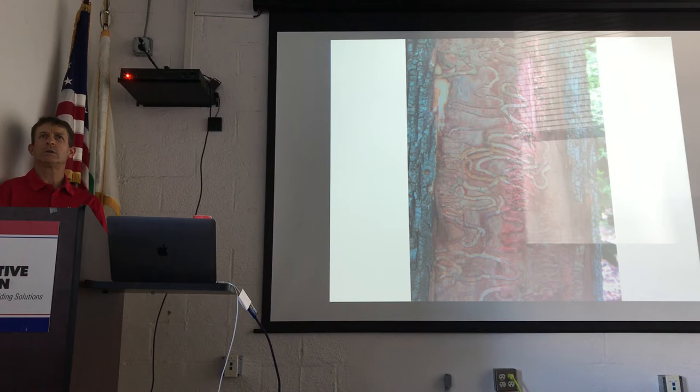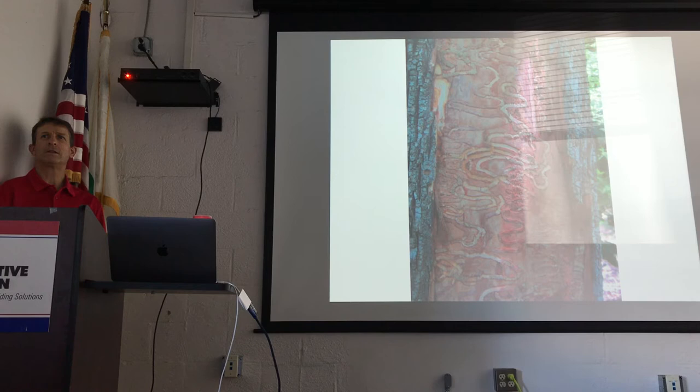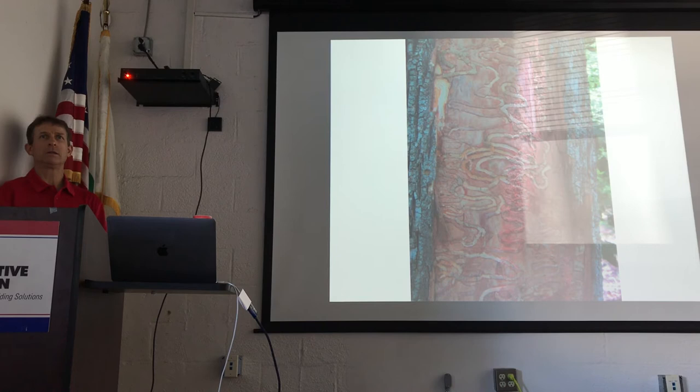Where did the emerald ash borer come from? Eastern Asia — and I know it's been around a little bit longer than that. It was first detected in the Midwest, around Chicago and Indiana, much earlier. As with global shipping, these things get moved around — a wooden pallet made out of an ash tree in China, for example, coming in a shipping container.